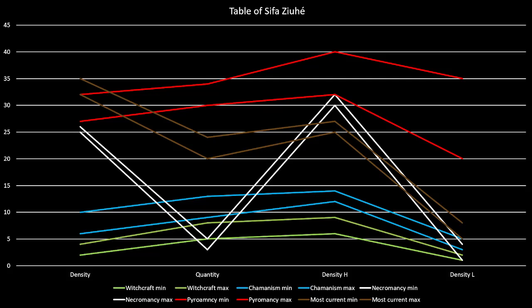For that, you meet a specialist who will determine your values for the four values of the table: the density, the quantity, the density H, and the density L. The density is density of magic.